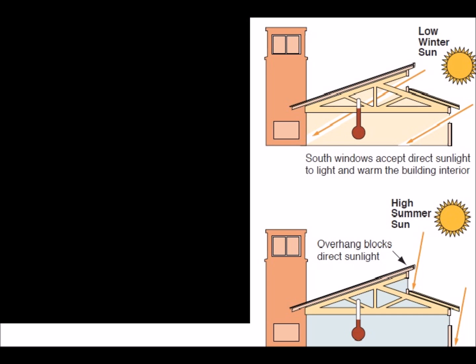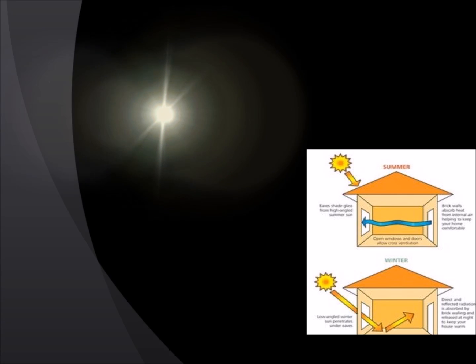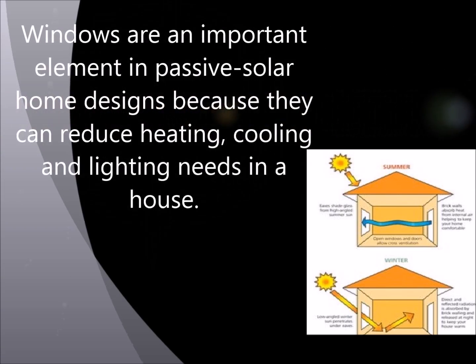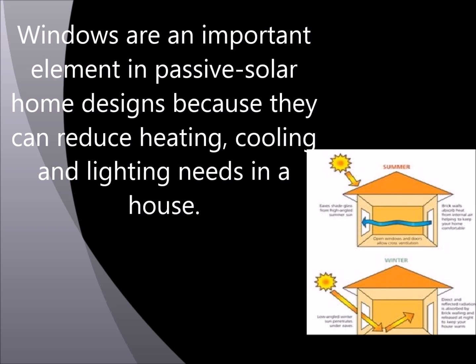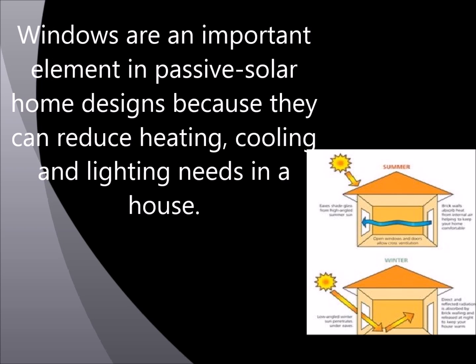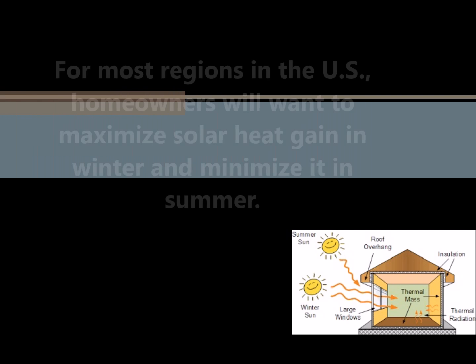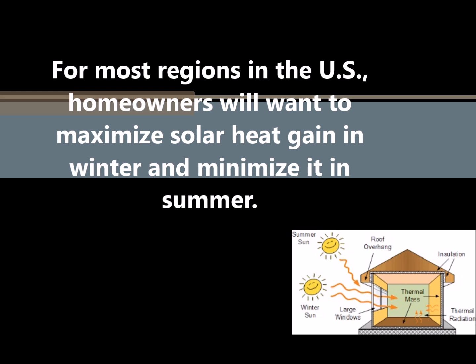Next we look at passive solar window design. Properly designed and energy efficient windows represent a cost effective way to use solar energy for heating. Windows are an important element in passive solar home designs because they can reduce heating, cooling, and lighting needs in a home. Passive solar design strategies vary by building location and regional climate. The basic techniques involving windows remain the same: select the orientation and the size of glass to control solar heat gain, along with different glazings usually selected for different sides of the house. For most regions in the US, homeowners will want to maximize solar heat gain in the winter and minimize it in the summer.